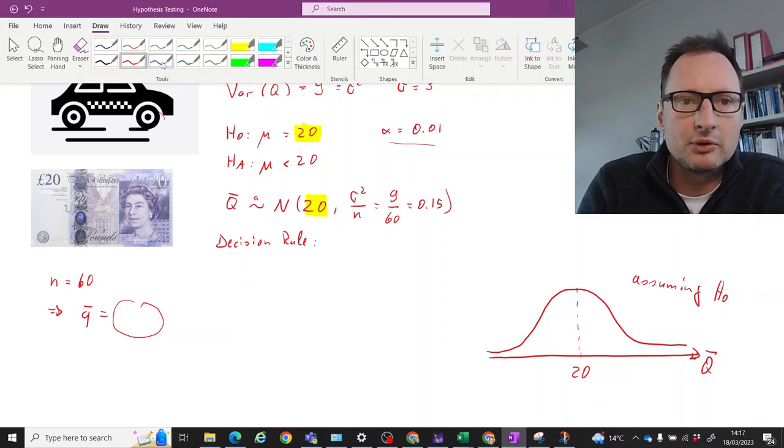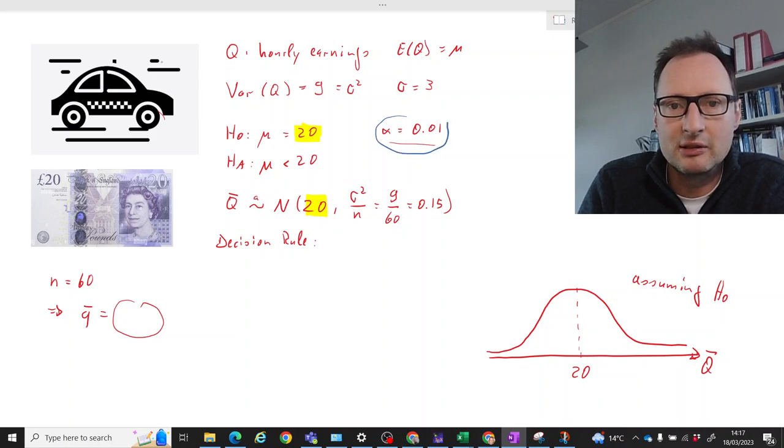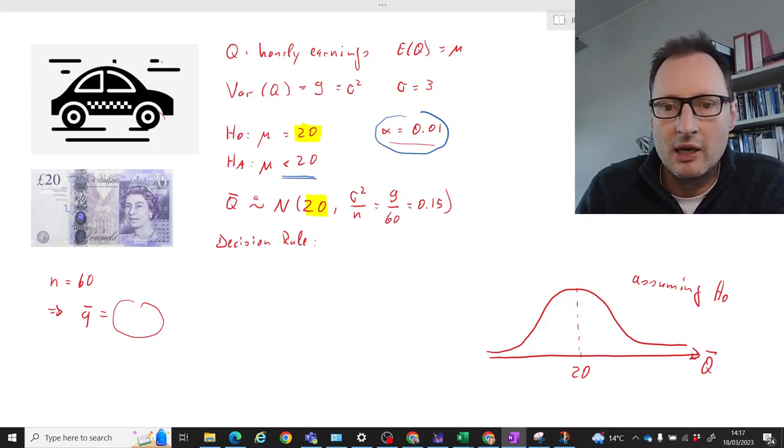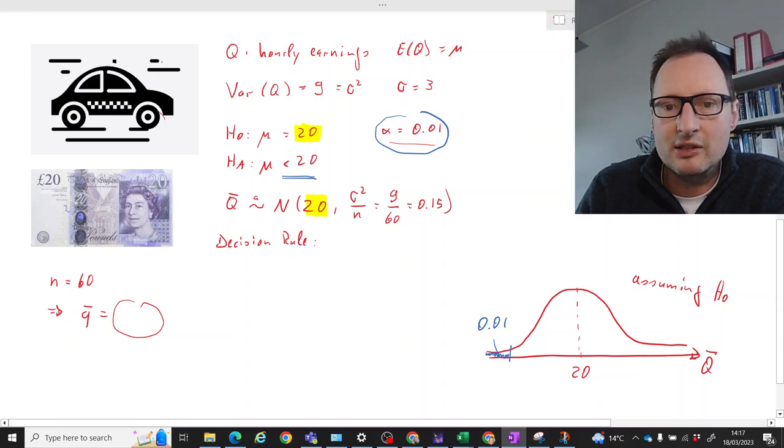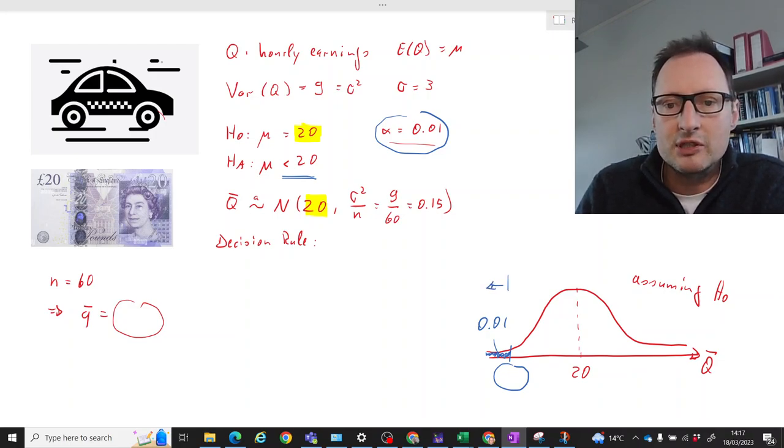So let's think about what type of value of Q bar would produce a p value smaller than one percent. We're taking this one percent and we're having a left tail test, so we are worried about small values of Q bar. So we need to find that value of Q bar that cuts off one percent of the distribution. If we get a Q bar which is smaller than that value then we will reject H naught.